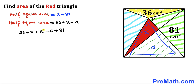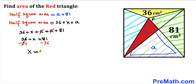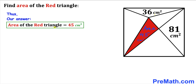We can see that a cancels on both sides, so we end up with 36 plus x equals 81. Subtracting 36 from both sides, our x value turns out to be 45 centimeters square. So the area of the red triangle is 45 centimeters square.